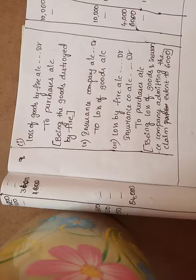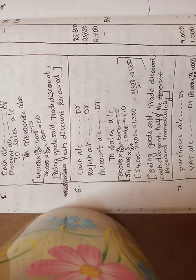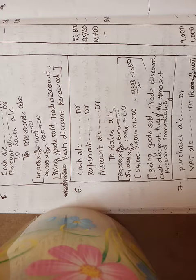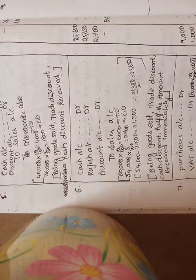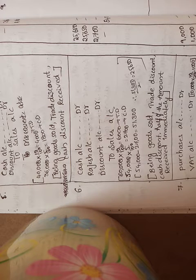These are the several journal entries on different conditions: uninsured, insurance company insuring full amount, or insurance company giving the claim up to ₹6,000. After these topics are completed, from the next class we will discuss about the Trial Balance. I will give one homework problem — please do that problem.